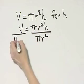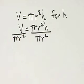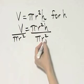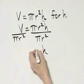Divide on the right side, so on the left side, I divide by the exact same thing. Now notice what happens. The pi's divide out, the r squares divide out, and I have simply h.